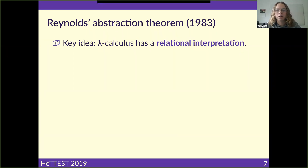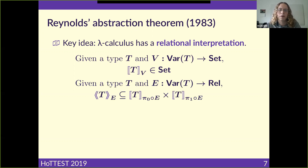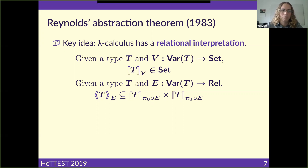The key idea of Reynolds' abstraction theorem is that the lambda calculus has not only a set-theoretic interpretation but a relational interpretation. If you assign a set to each variable in a type expression T, you can interpret T as a set. But there is also a relational interpretation: if you instead have an environment of relations — assigning a relation to each variable in T — then you can interpret T as a relation, specifically a relation on the interpretation of T at the first component of the environment and the interpretation of T at the second component.